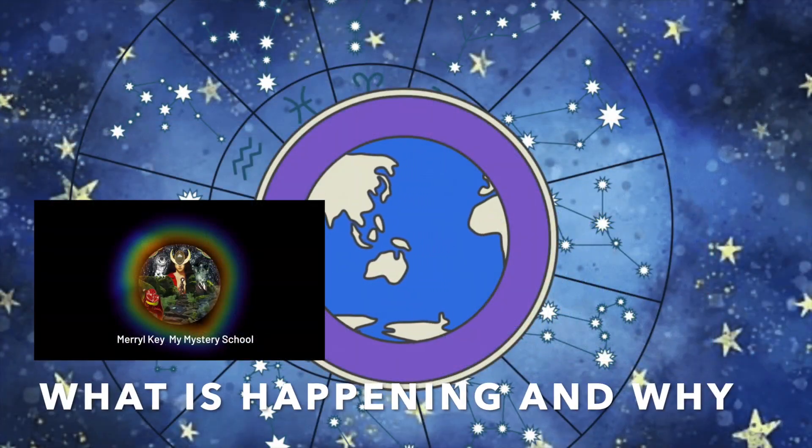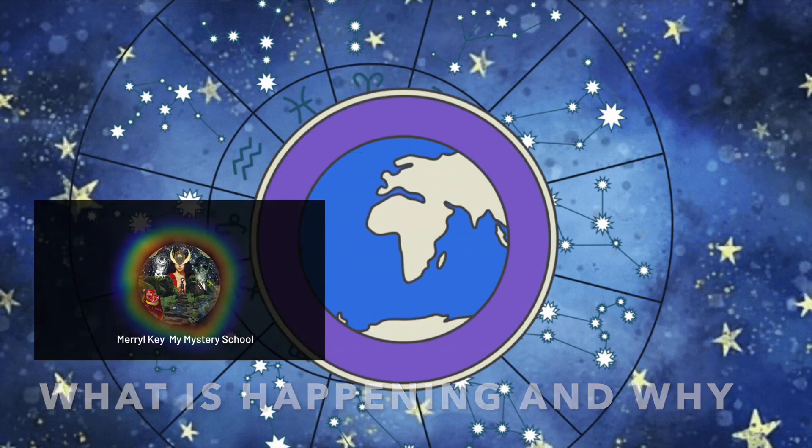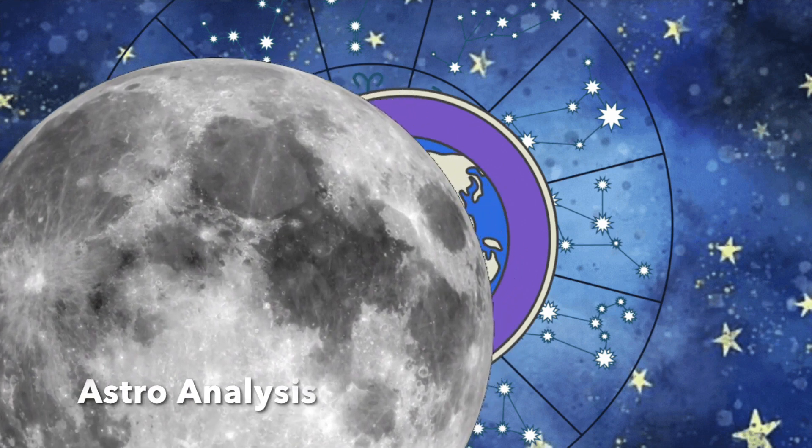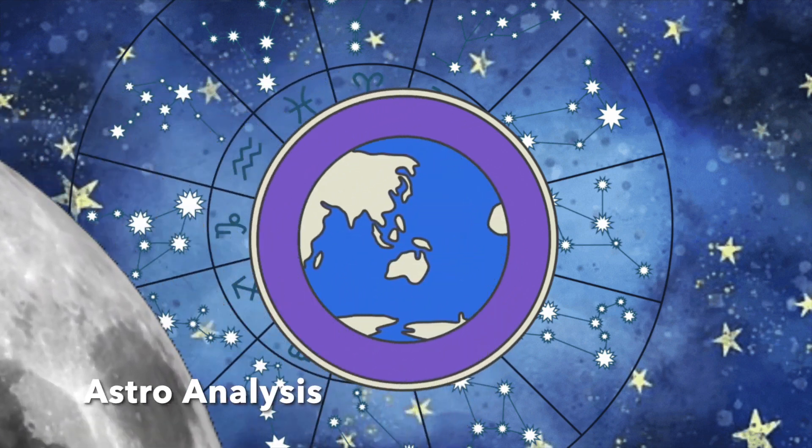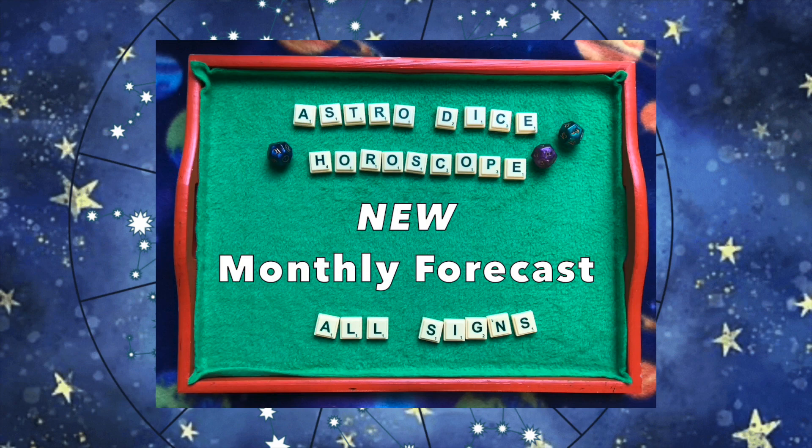This is What's Happening and Why Astrology, where we look at global events and link it to the astroclimate. If you want specifics on your sun sign, I put out a monthly sun sign astro dice review. Check it out at the start of each month.